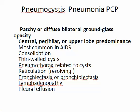PCP is mainly upper, lower, or central in distribution. These patients are more common in AIDS. You can see consolidation, sometimes thin-walled cysts — as the name implies, pneumocystis — and pneumothorax may also be present. Reticulations indicate the exudative phase is resolving. Bronchiectasis may occur due to traction. Lymphadenopathy and pleural reaction can occur.